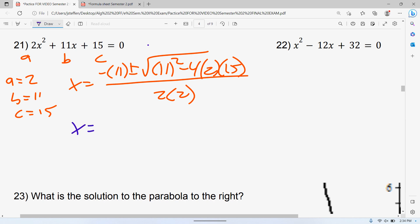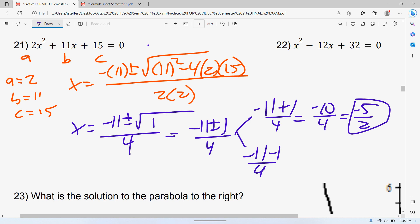So this is where again you can stick this in the calculator if you want. 11 squared minus 2 times 2 times 15. Negative 11 plus or minus 1 over 4. So negative 10 over 4 ends up being negative 5 over 2 that's what we found earlier. Negative 12 over 4 ends up being negative 3, which is the other answer we got doing factoring.